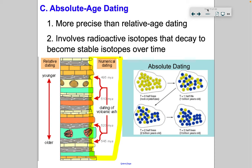Another way to date fossils is called absolute age dating, and this is way more precise than relative age dating. In this type of dating, you use radioactive isotopes — basically atoms that decay. They lose neutrons and protons and become different elements to become more stable. You can measure the rate at which they do that, and we call those half-lives. You need to know that absolute age dating uses radioactive isotopes and that it's way more precise.